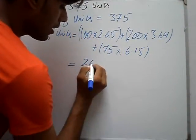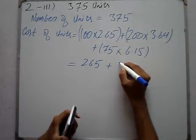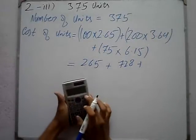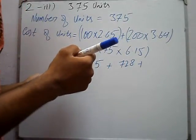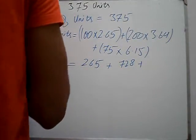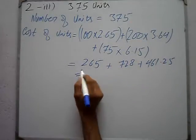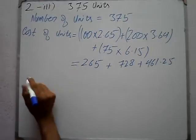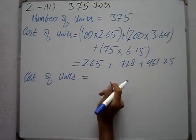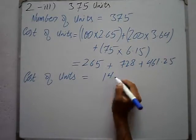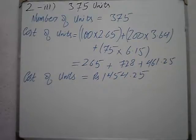So 600, then 300 by 6.15 — 461.25, 461.25. Total cost of units comes to Rs 1454.25.